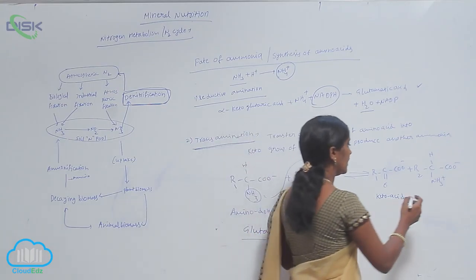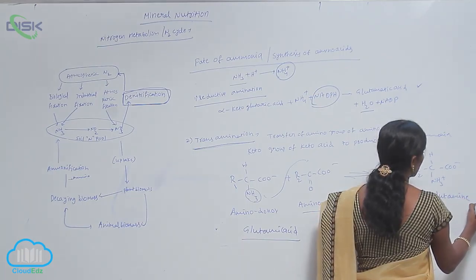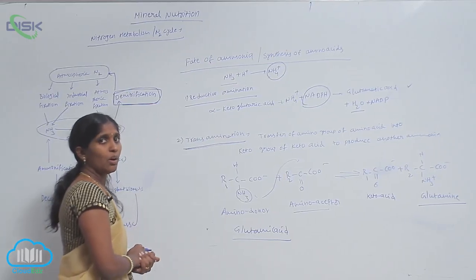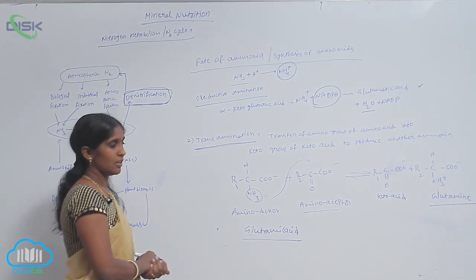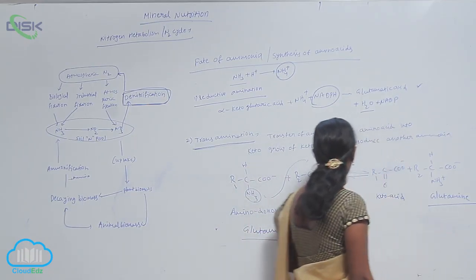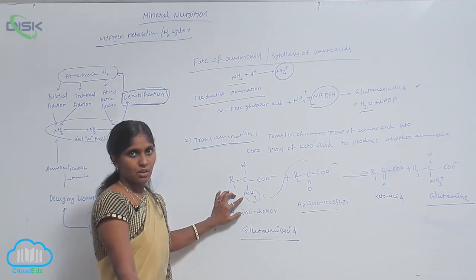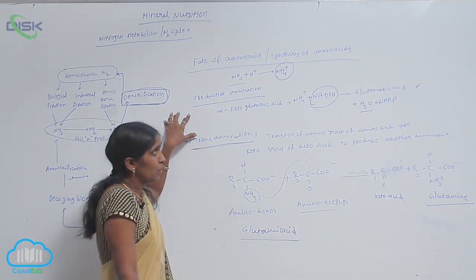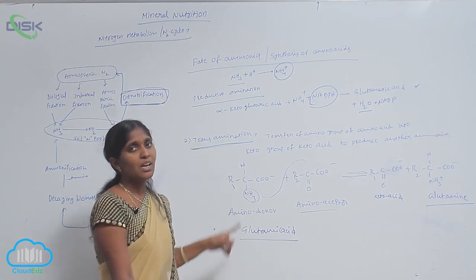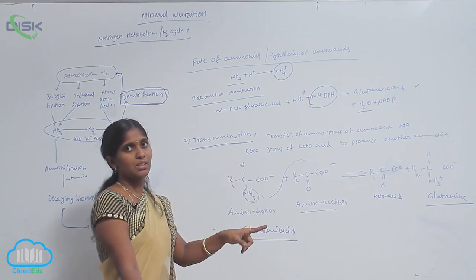The new amino acid produced is glutamine. Glutamine has two amide groups. This means the production of glutamine from glutamic acid involves the uptake of amino groups. So not only is ammonia involved in the production of glutamic acid, but glutamic acid itself is also involved in the production of another amino acid, glutamine.